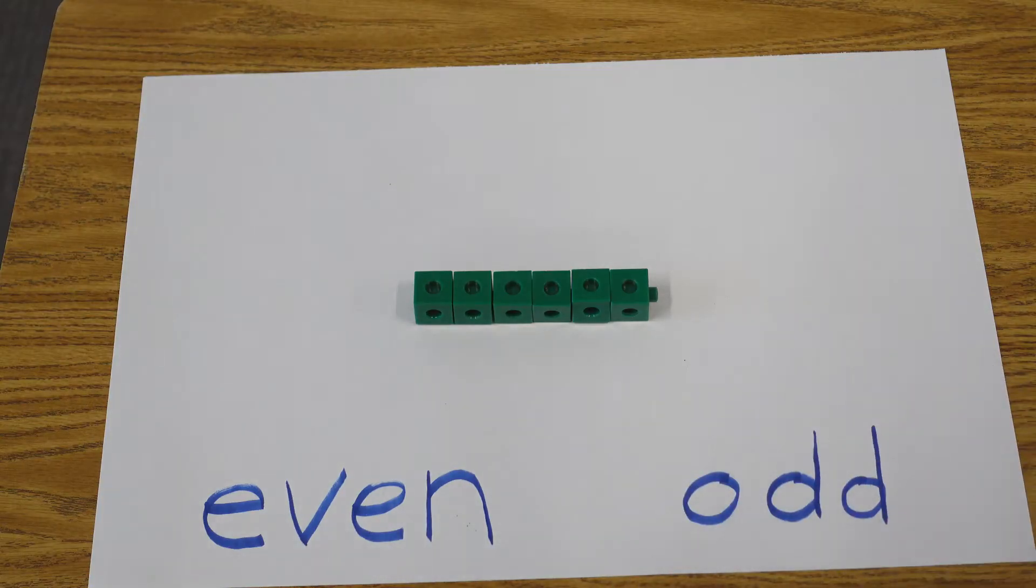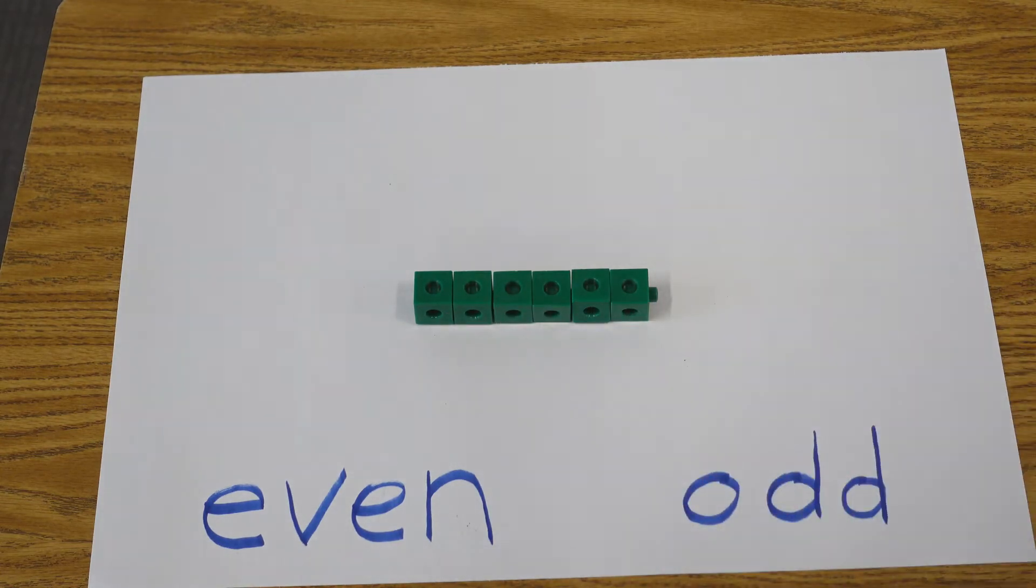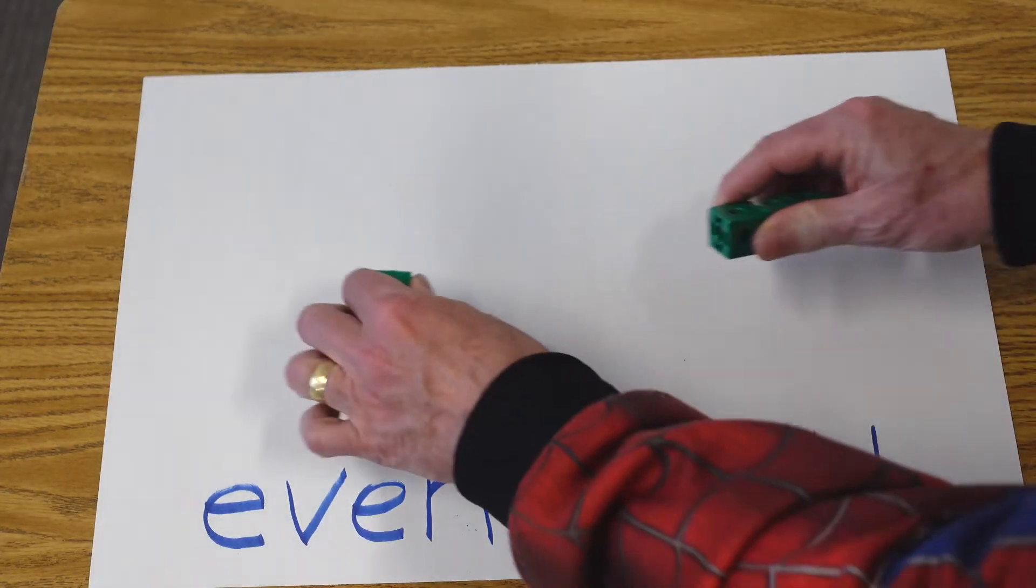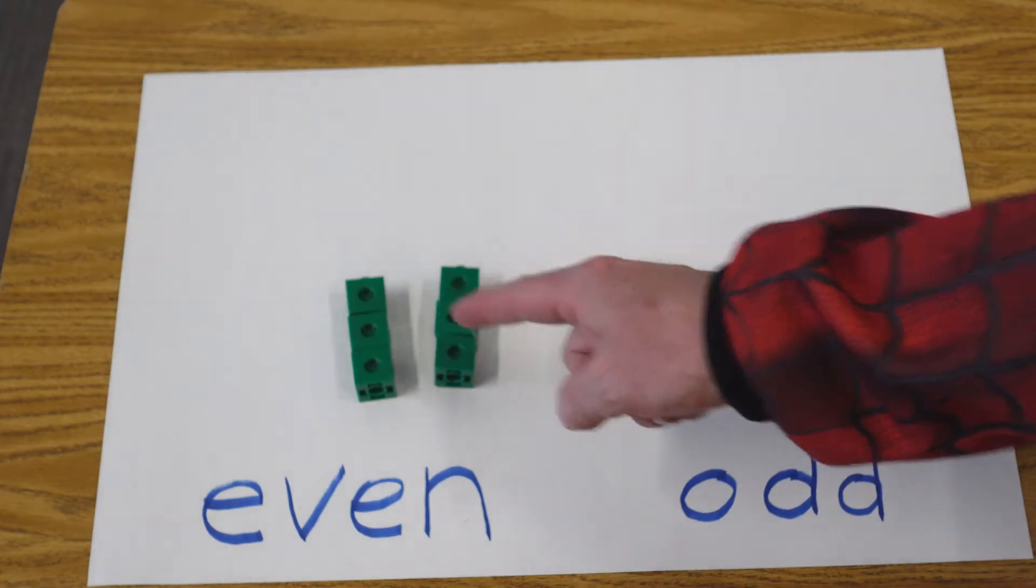Okay, can you tell me the number of cubes we have here? Let's see. We have 1, 2, 3, 4, 5, 6. That's right. 6 is an even number. If we take 3 cubes here and 3 cubes here, we have an even number on both sides.